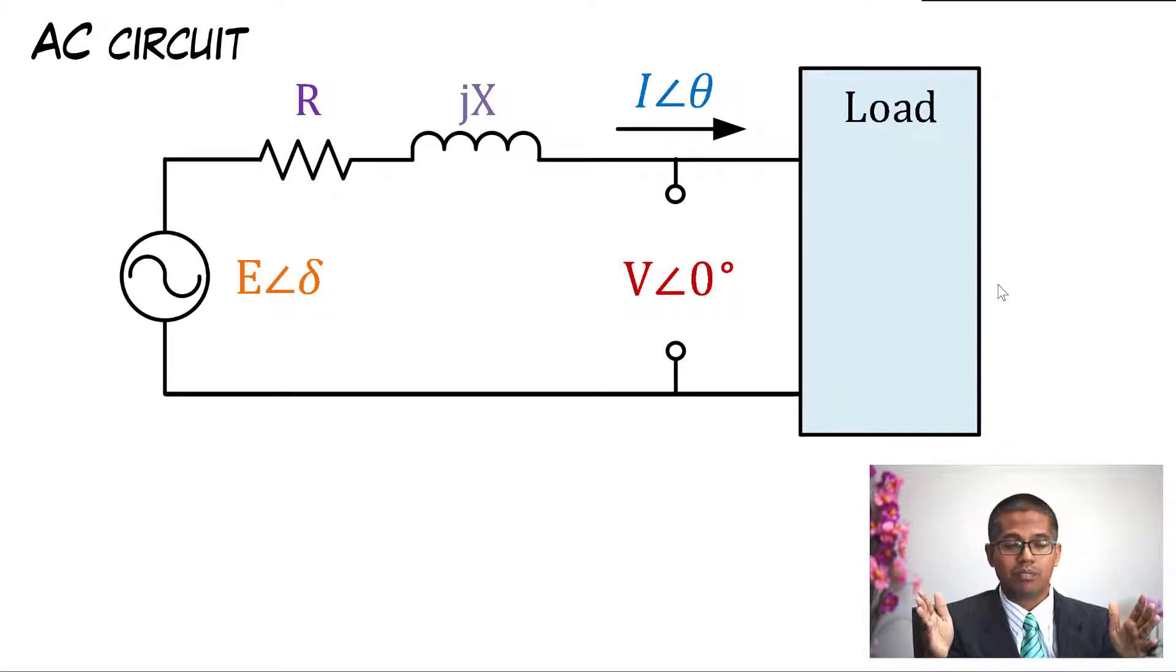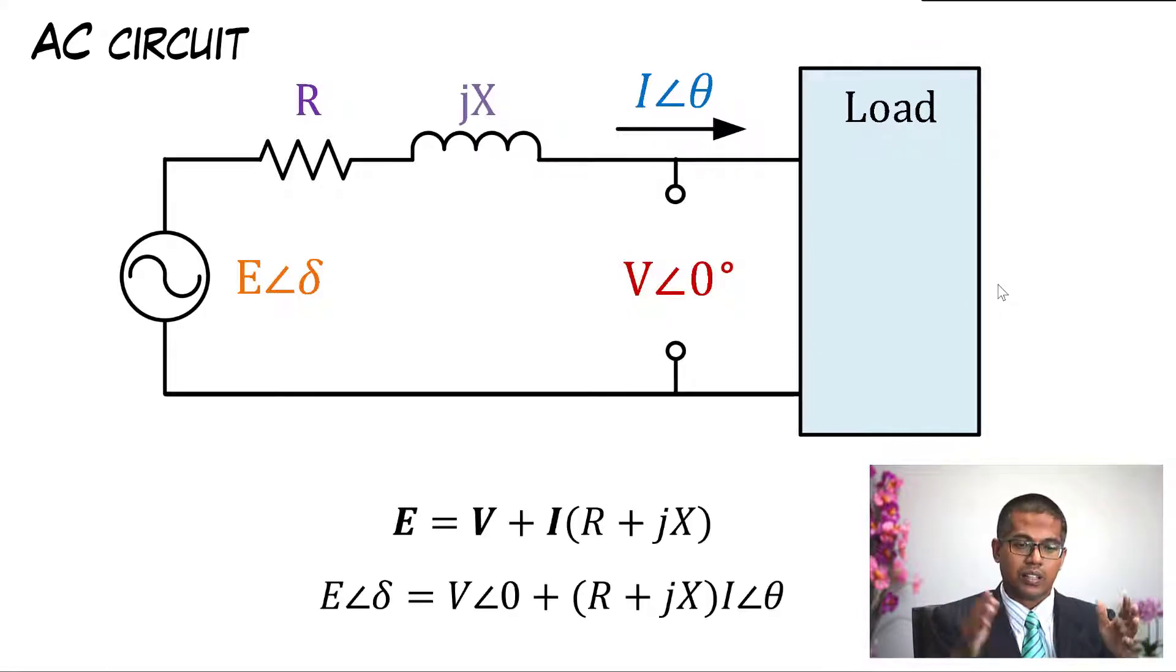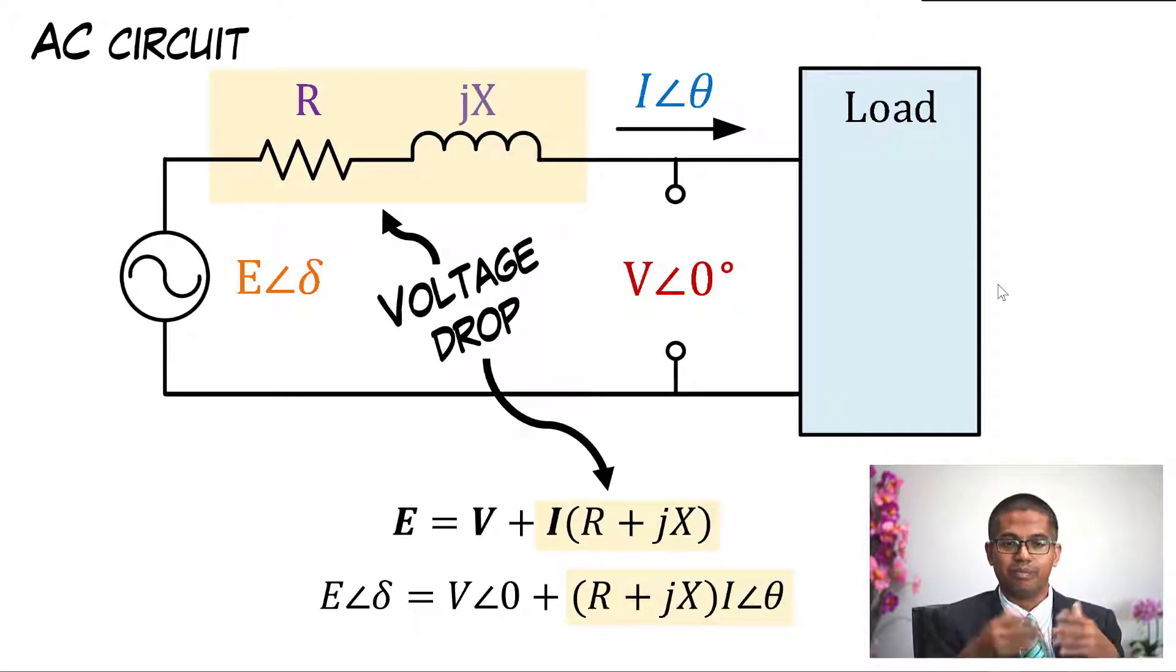This is the equation where E equals V plus I multiplied by the line impedance R plus jX. Where is the voltage drop? The voltage drop is at the line impedance, and mathematically we define this as I multiplied by R plus jX.